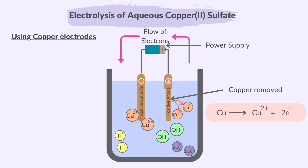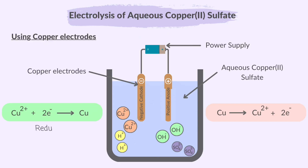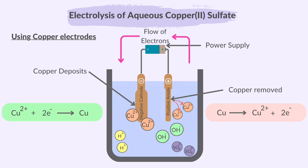Now let's see what happens at the cathode. The copper ions in the solution are attracted to the cathode and they gain electrons by reduction to form copper atoms. These copper atoms get deposited on the copper cathode, causing it to increase in mass. The gain in mass at the cathode is equal to the loss in mass at the anode, suggesting that the copper deposited on the cathode comes from the copper ions lost at the anode. Therefore, the concentration of Cu²⁺ ions in the electrolyte remains the same, since one electrode produces copper ions whereas the other removes them.